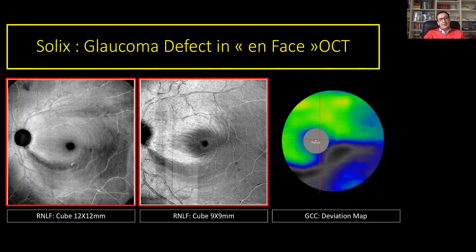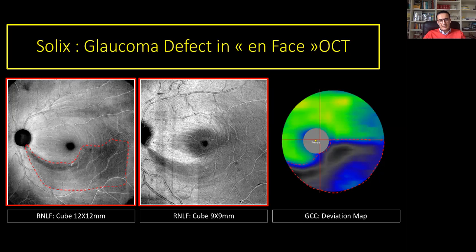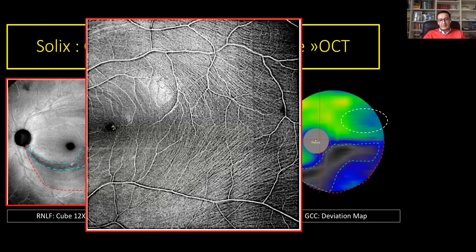You have to keep in mind the quality of EnFace OCT embedded with the OCTA pattern. In this case of a 12x12 cube, you can very well analyze the RNFL topography. In this case of glaucoma, you can analyze the degree of the defect as compared to the GCC deviation map, and you can make a very good correlation between structural function and visual field. In a normal case, the RNFL is very well delineated in EnFace OCT.